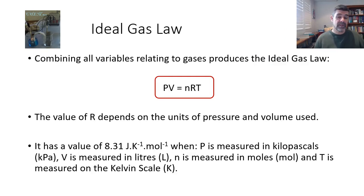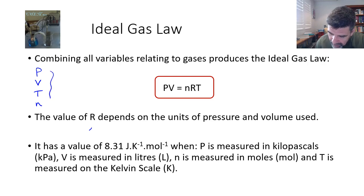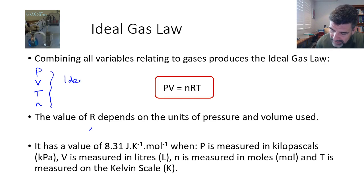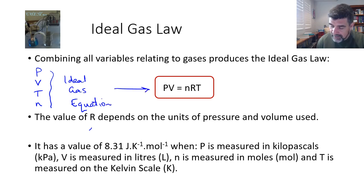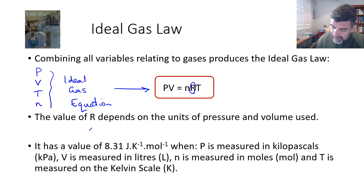So what's the purpose of all of this? Well, the purpose is that we can actually take all of those key variables — pressure, volume, temperature, number of moles — and combine them all into a single equation, which is known as the ideal gas equation. It looks exactly like this: pressure multiplied by volume is equal to the number of moles multiplied by the universal gas constant R, multiplied by temperature.